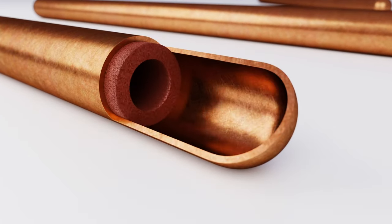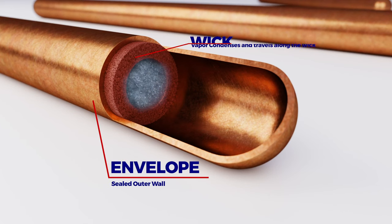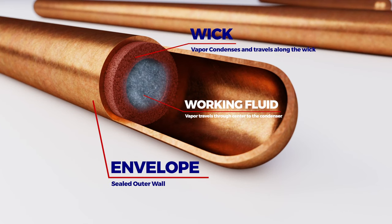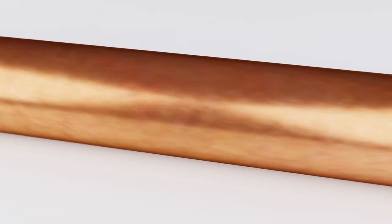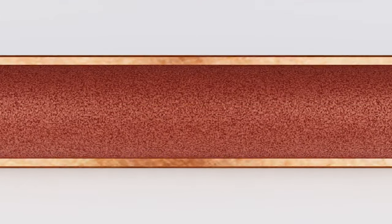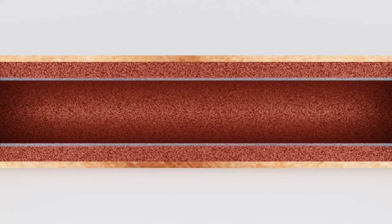A heat pipe is comprised of an envelope, a wick structure, and a small amount of working fluid. The fluid is processed under vacuum, which allows for two-phase operation across a wide temperature range.